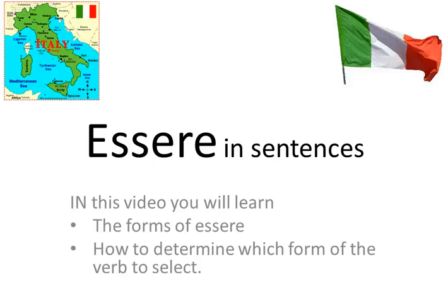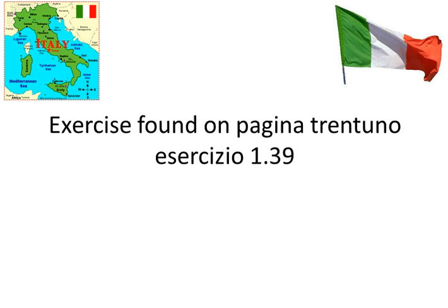Ciao studenti! In this lesson we're going to be looking at essere in the context of sentences. You'll have to know the forms of essere and also how to determine which forms of the verb to select when you are actually in a sentence. Let's look at the first one here. These exercises are found on pagina 31 and this is esercizio 139.